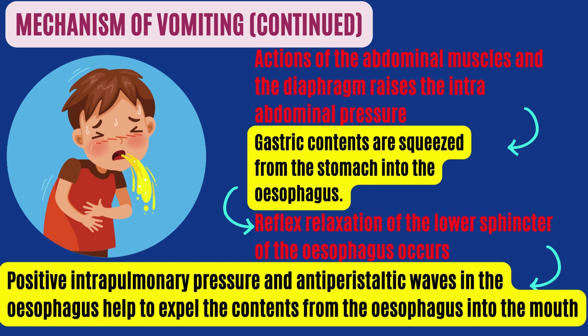At this moment, a reflex relaxation of the lower sphincter of the esophagus occurs. At the same time, positive intrapulmonary pressure and antiperistaltic waves in the esophagus help to expel the contents from the esophagus into the mouth. Activation of the sympathetic and parasympathetic systems leads to symptoms like nausea, salivation, sweating, and increased heart rate. These are known as retching, which precedes the actual vomiting.